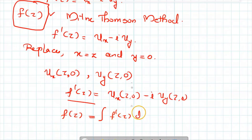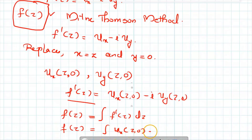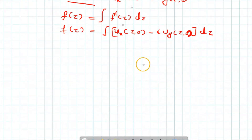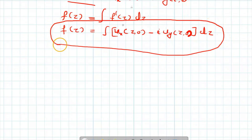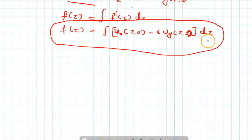We want to find f of z, so we integrate f'(z) with respect to z. That is, f of z is equal to the integral of [ux at (z, 0) minus i·uy at (z, 0)] dz. Remember this equation: f of z equals the integral of ux at (z, 0) minus i times uy at (z, 0), dz. This equation gives the analytic function f of z.